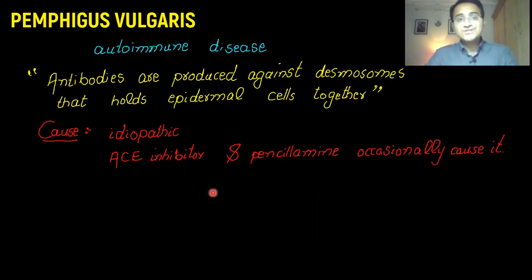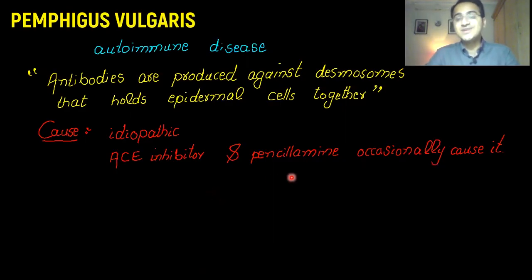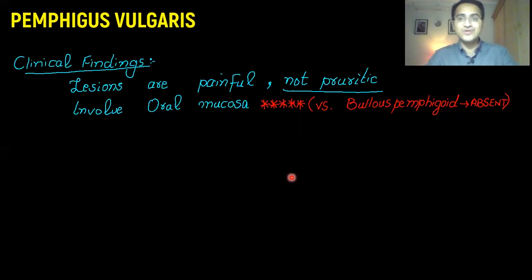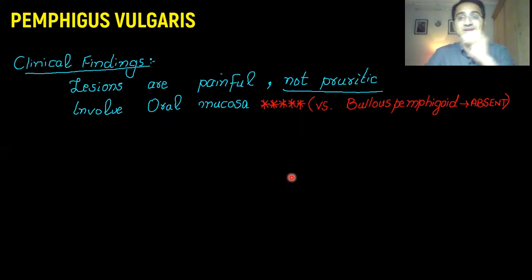Causes of Pemphigus vulgaris are mainly idiopathic, but ACE inhibitors and penicillamine can occasionally cause it. Clinical findings include that these lesions are very painful, but they are not pruritic — they do not cause itching, but they are quite painful.